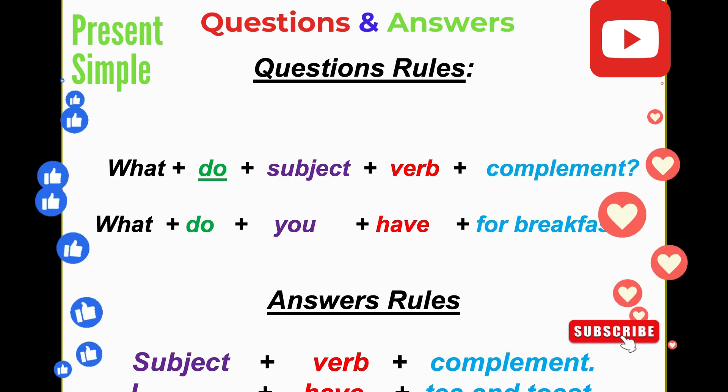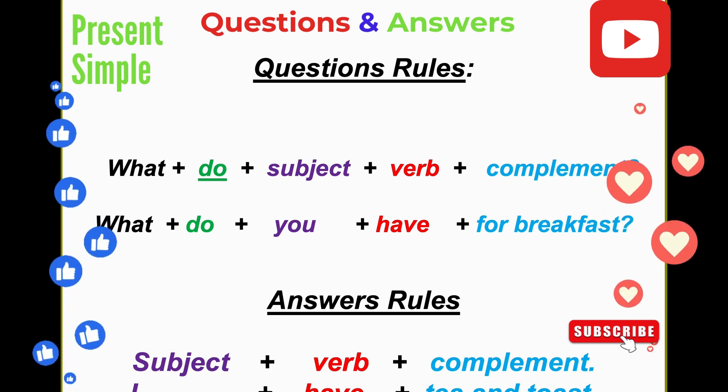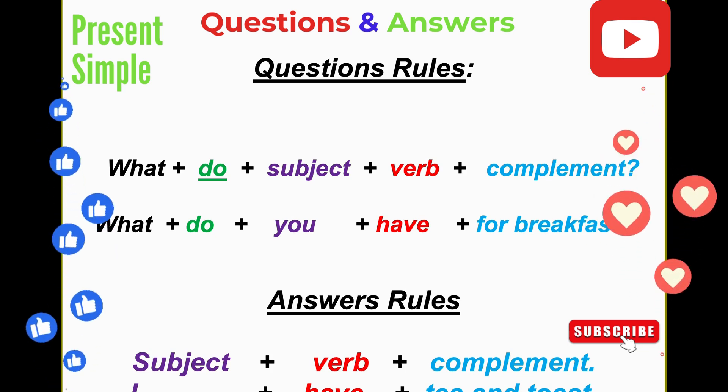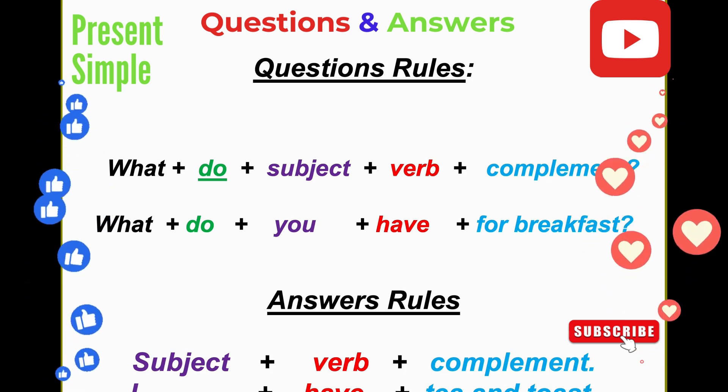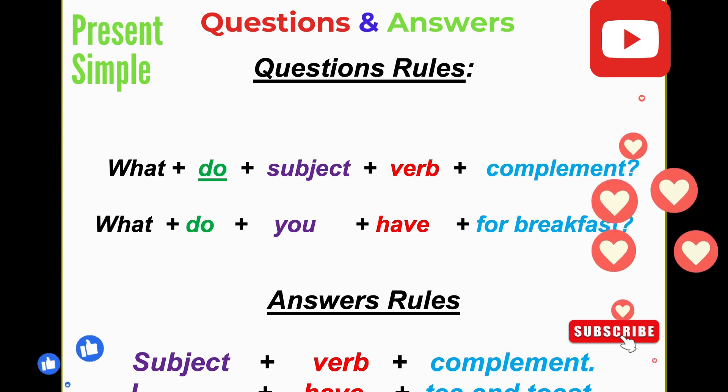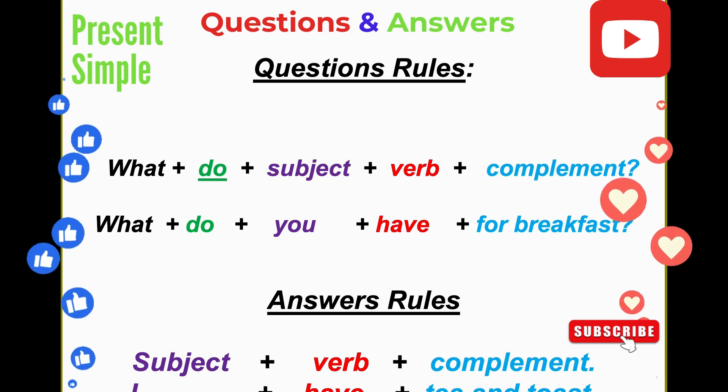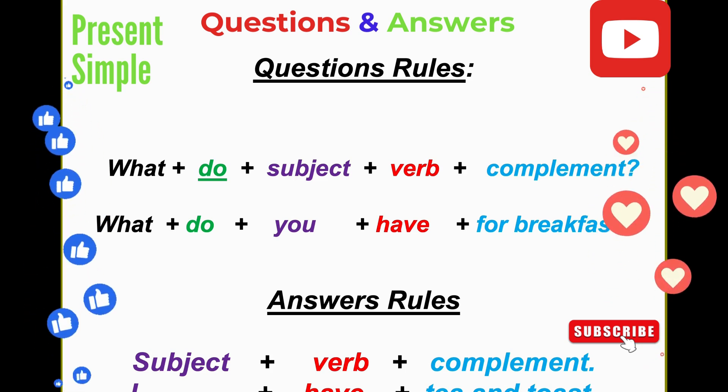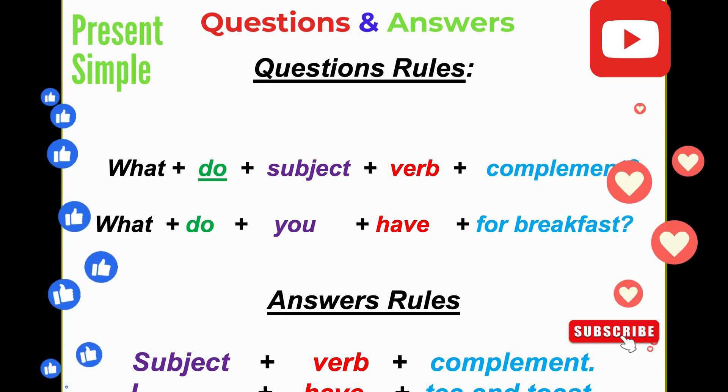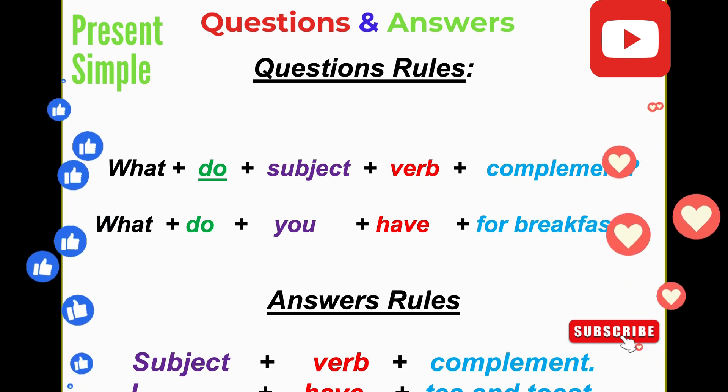The first word is what, the second word is do (the auxiliary verb), and the third word is subject (I, you, we, they, he, she, it) plus verb to have plus complement. For example, what do you have for breakfast? What is the WH word, do is auxiliary, you is the subject, have is the verb, and for breakfast is the complement.